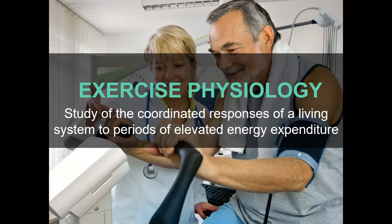You've heard the phrase 'muscle sets the demand.' When you move to exercise, there's a stress at the level of the muscle that requires oxygen, that requires glucose and/or fat substrate, that requires a certain breathing rate. There's a demand that is then satisfied by all of the systems in the body. Muscle sets the demand — that requirement is then met by metabolism in the muscle, ventilation at the lungs, blood flow at the heart. So the study of the coordinated responses of a living system to periods of elevated energy expenditure.